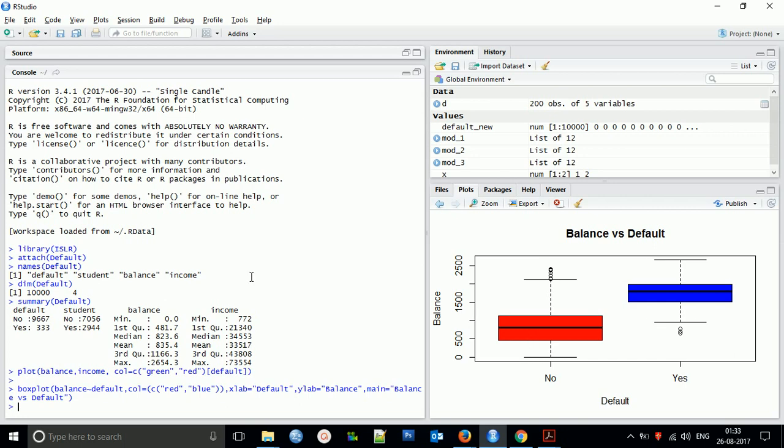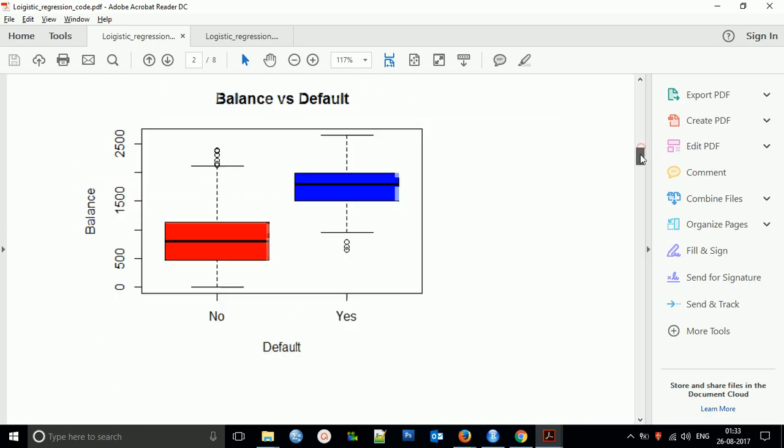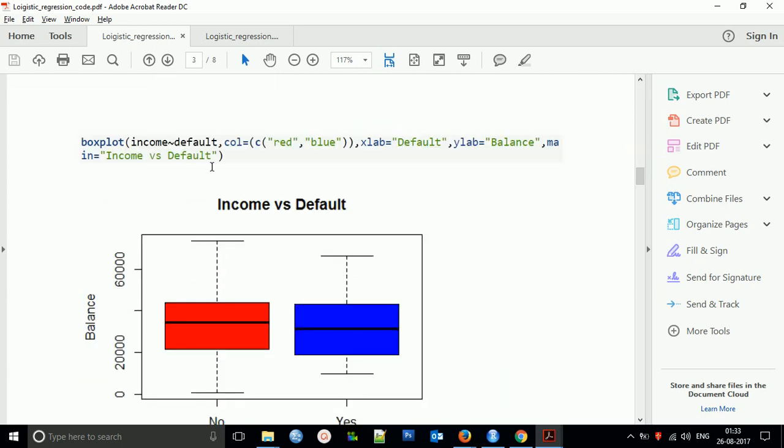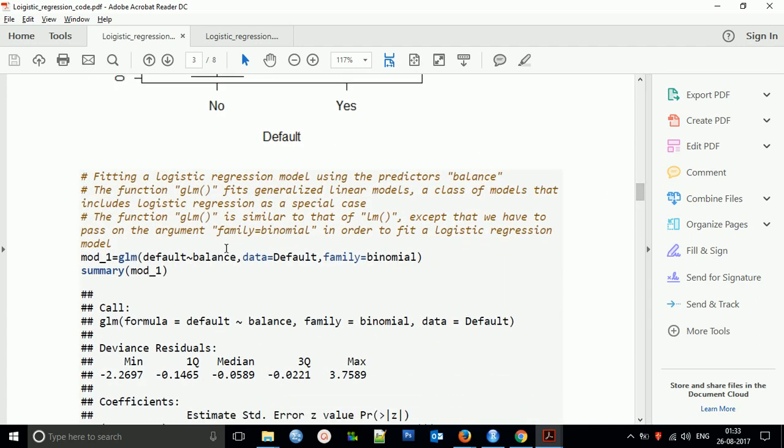We can see persons with low balance who have default are yes. These are not clearly stating what the relationship is. To understand more logically and deeply, we need to fit a logistic regression model using the predictor balance. The function glm fits generalized linear models, a class of models that include logistic regression.